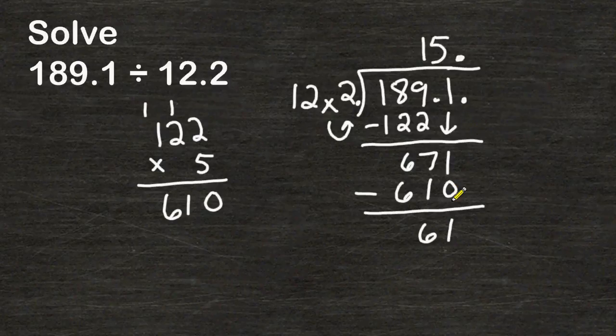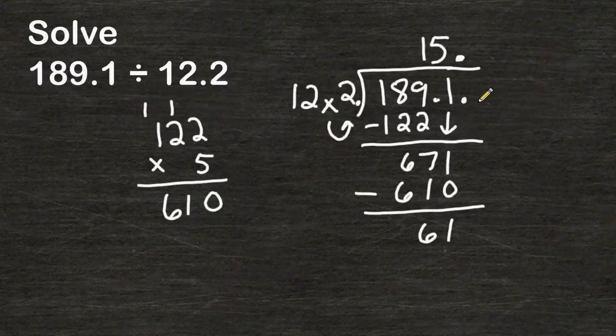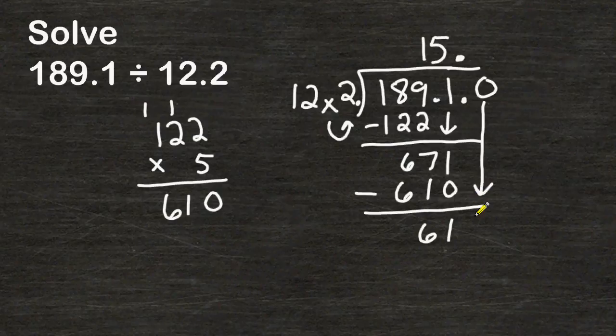Now if you have a remainder and there's no other digits to bring down simply add a zero in the next place value and then drop that straight down and continue your division.